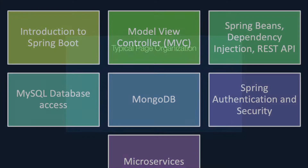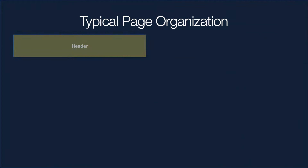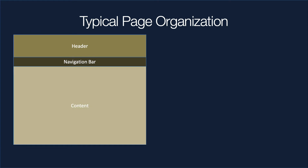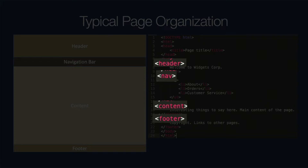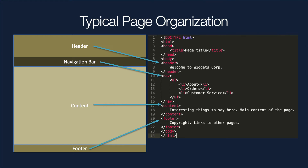Let's talk for a moment about a typical page organization. When you look at a website you're probably going to see things like a header, a navbar, main content, and a footer. This looks like standard HTML where you use those names right in the HTML tags, and you can build an entire static page like this. But what we're going to do is split up these sections into separate files so they can be dynamically set when the program runs.